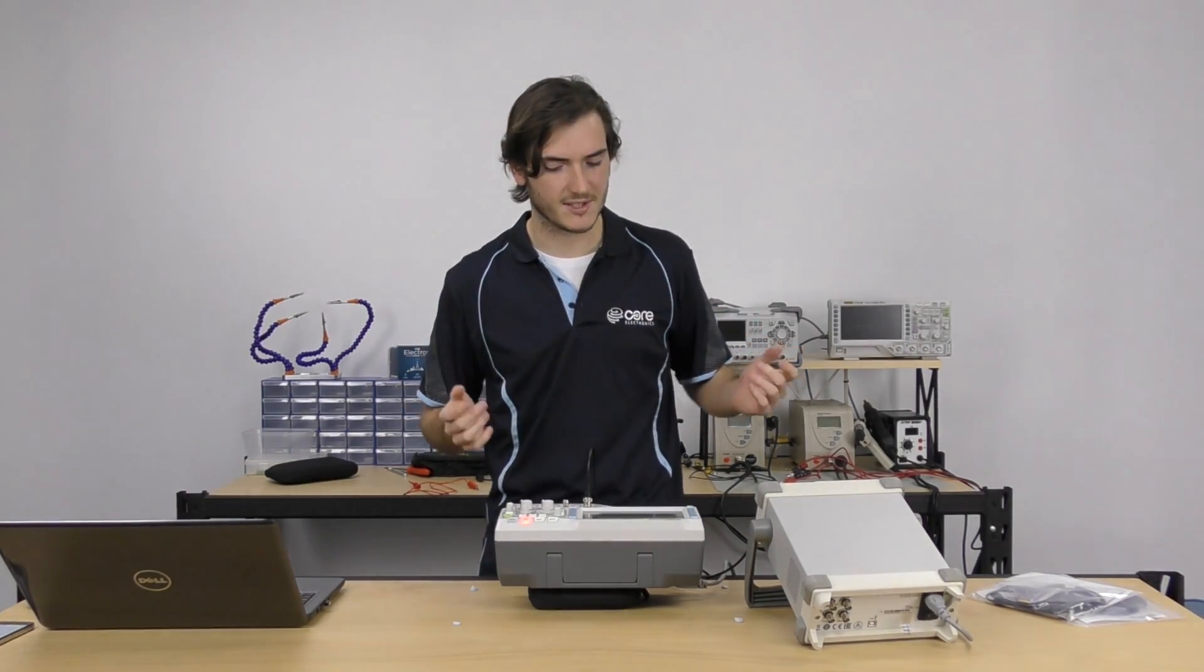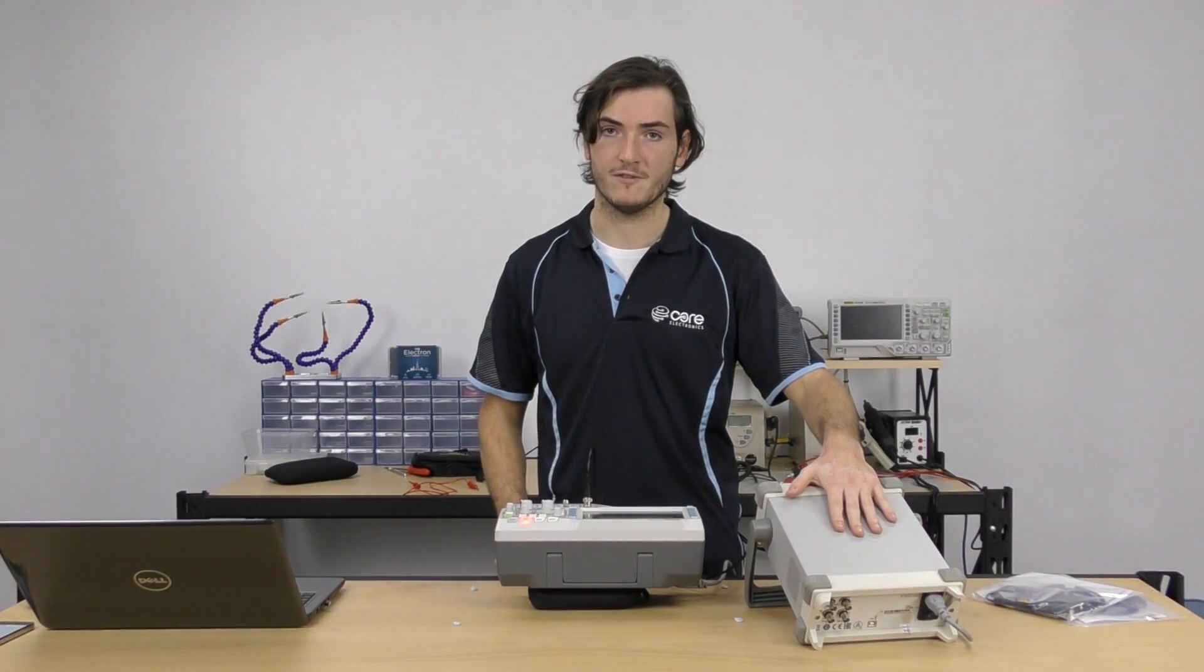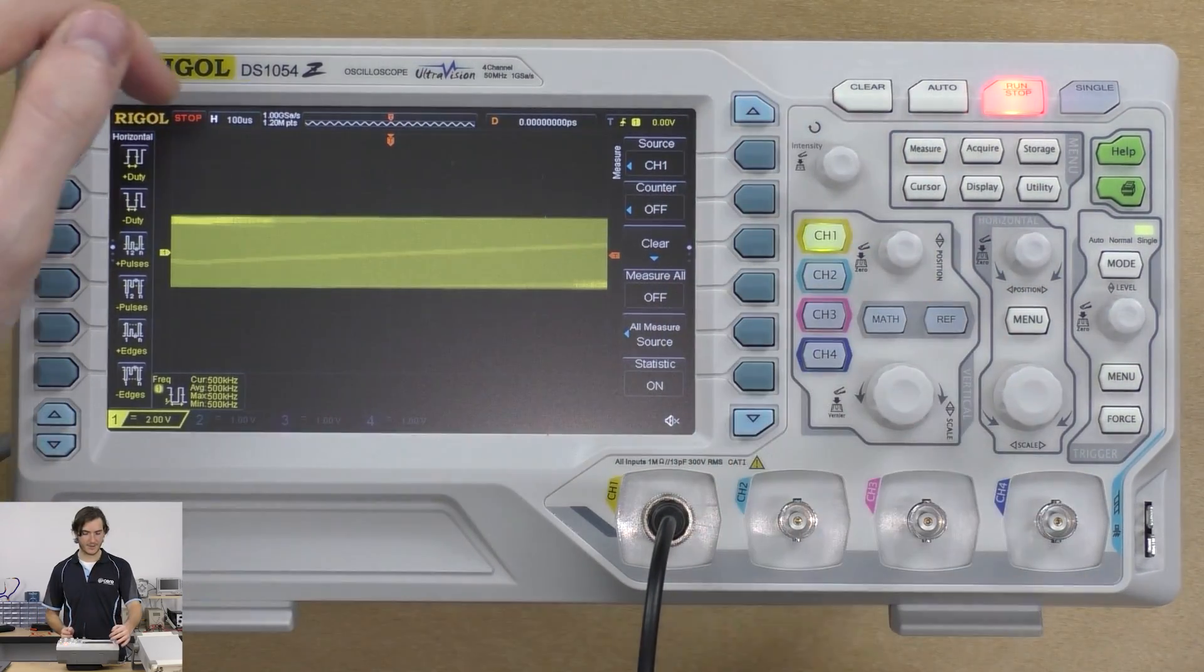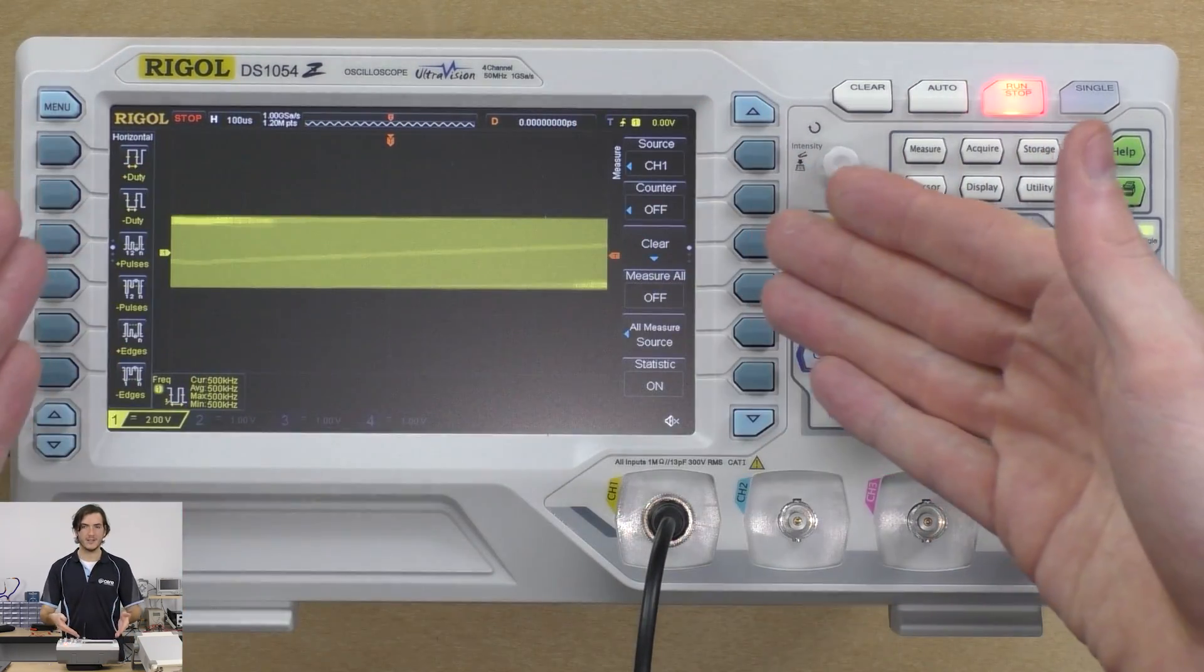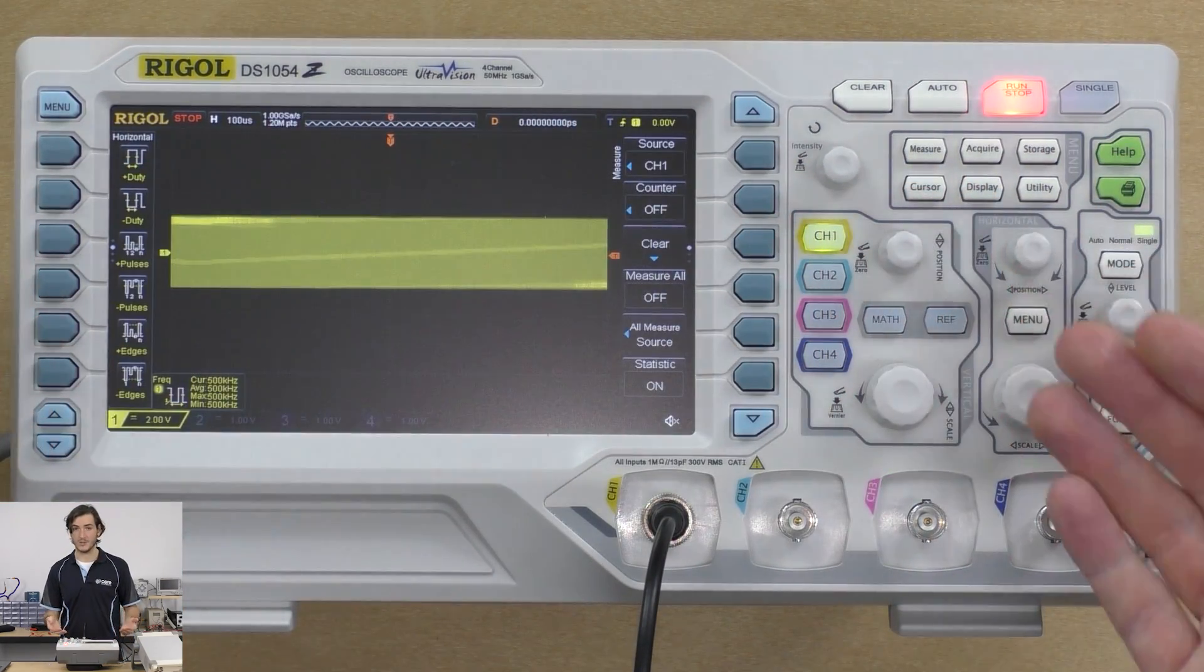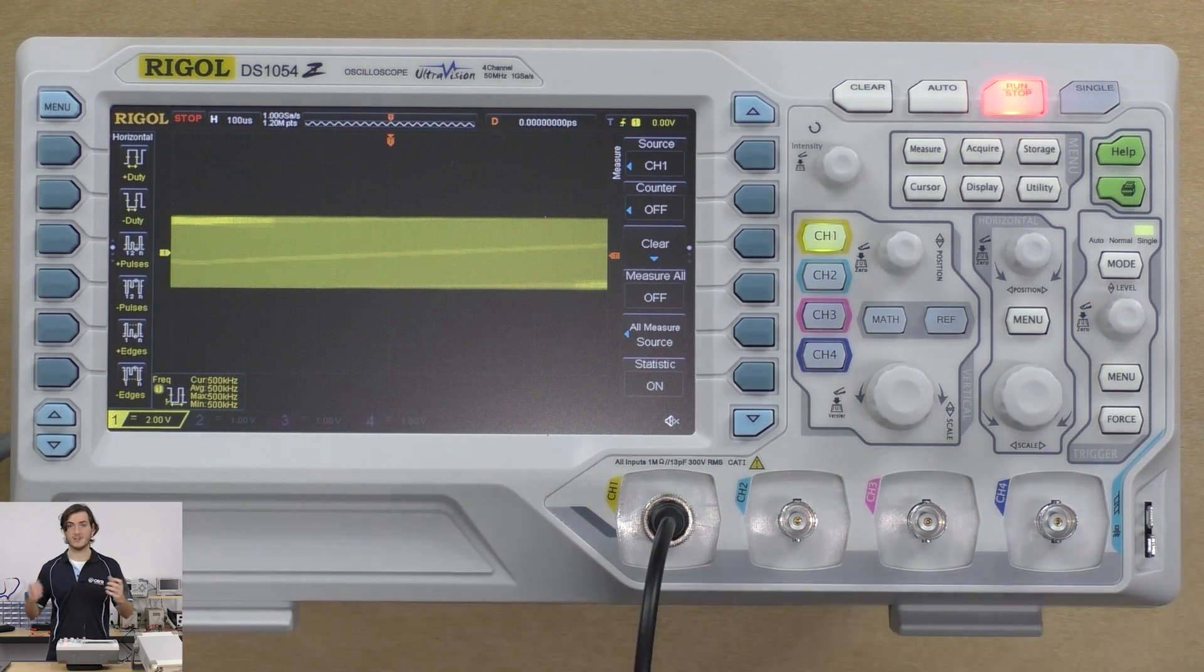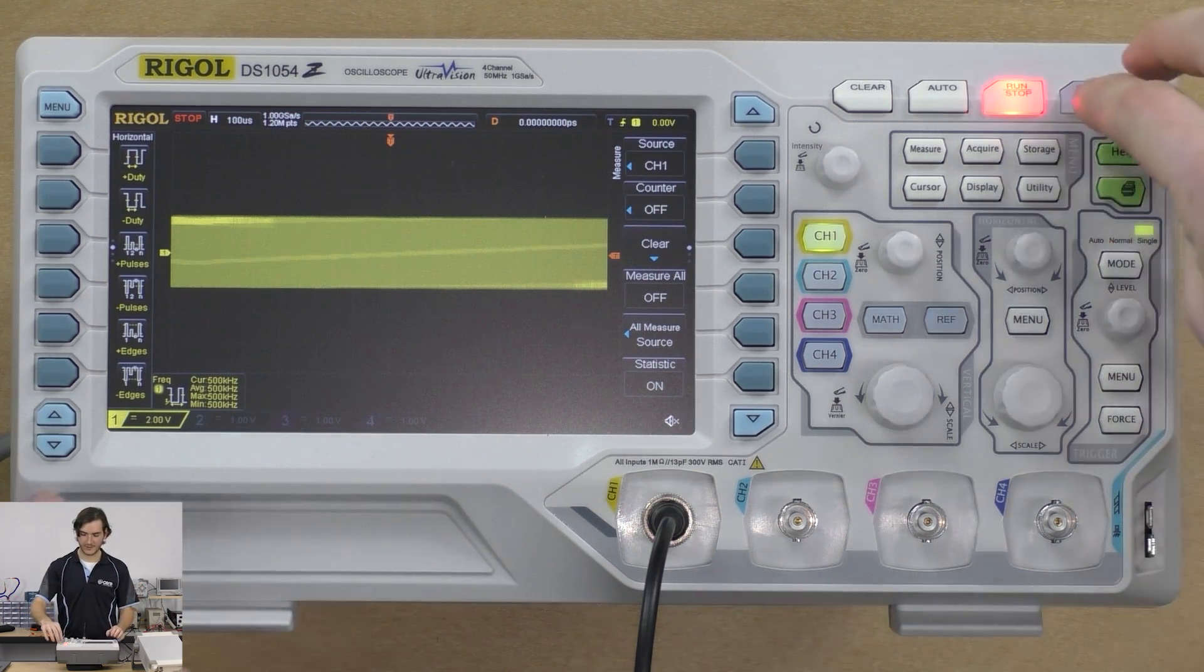Just as an example I've generated a 20 megahertz signal on the function generator. The scope is currently set up with a 100 microsecond time division, that means the entire screen is only showing about 1.2 milliseconds. But 1.2 milliseconds versus 20 megahertz, these are wildly different orders of magnitude.